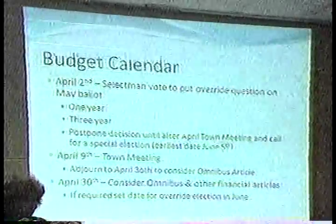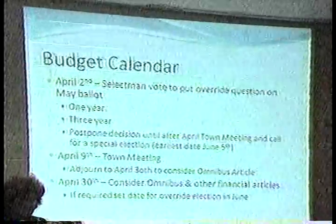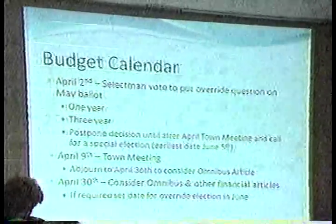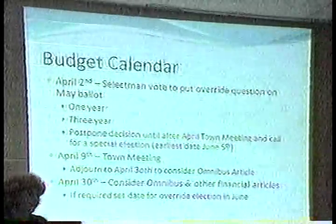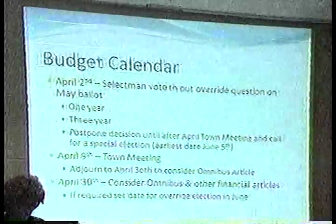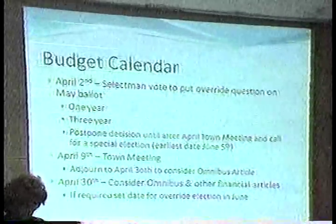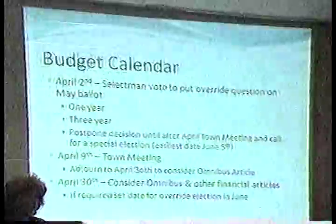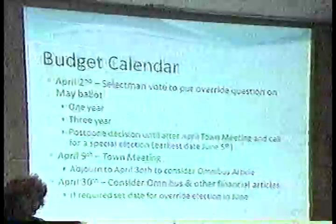We could also decide not to put an override question on the ballot at that time, wait until we finish our April Town Meeting, and then vote to put an override question on a special election sometime in June. The rationale to do that might be because of uncertainty about what state aid might be, and how it might impact an override question or even a three-year override plan.